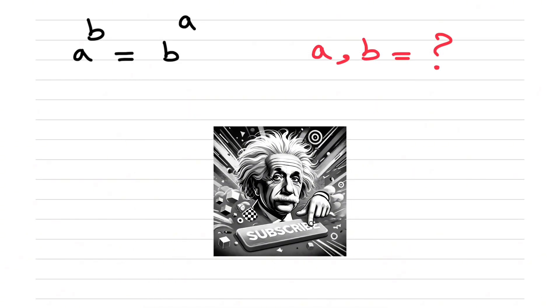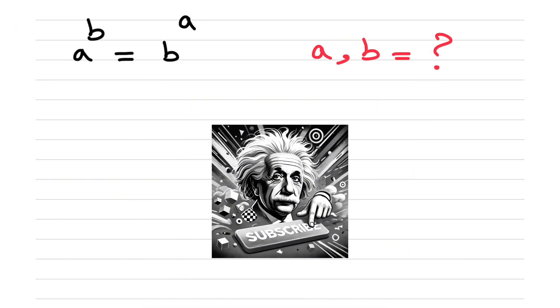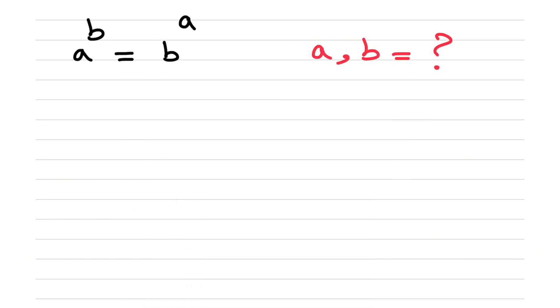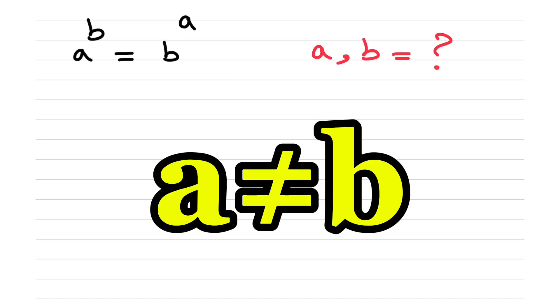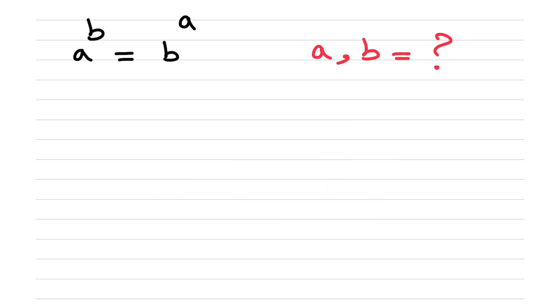What's up folks, welcome back to the channel. I'm back with another problem to solve and today is all about this equation where we have a to the b is equal to b to the a, and we need to figure out the values of a and b. Let's get into it.